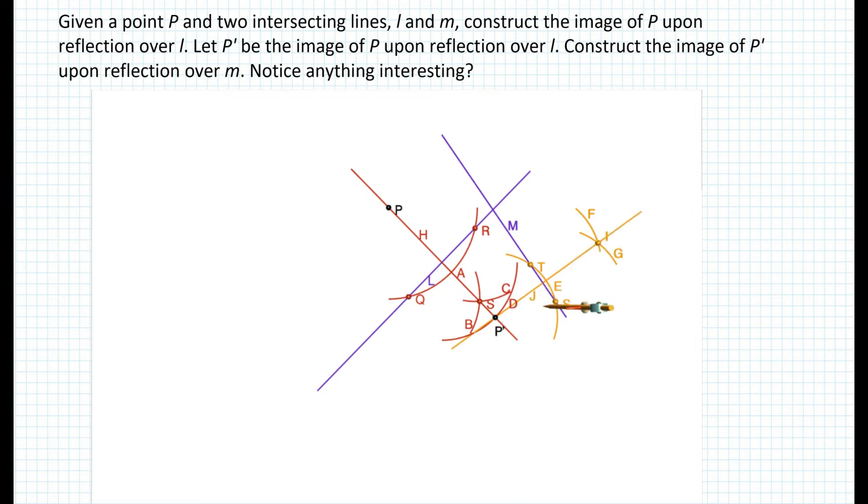And now we measure the distance from P prime to line M and copy it on the other side. Call that point P double prime.